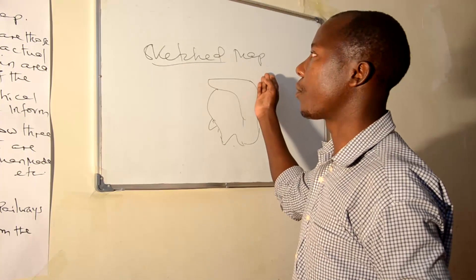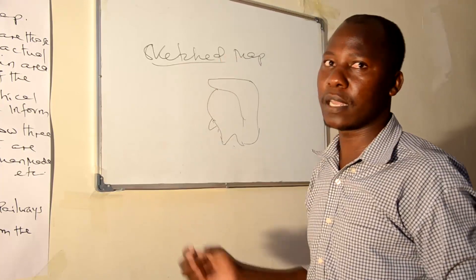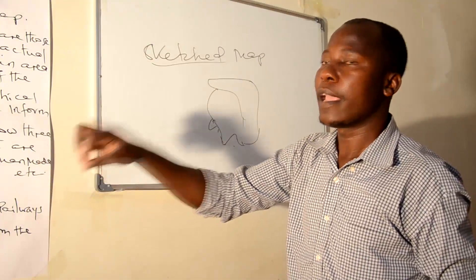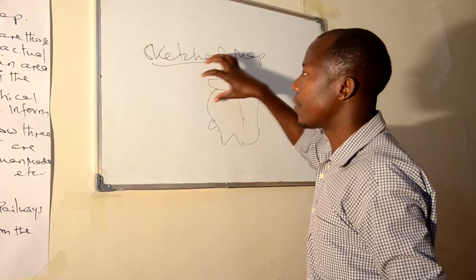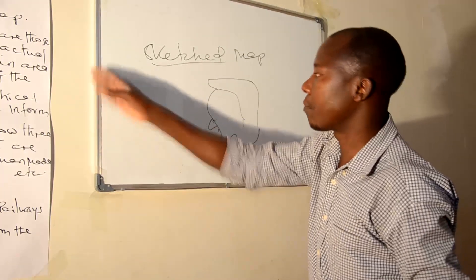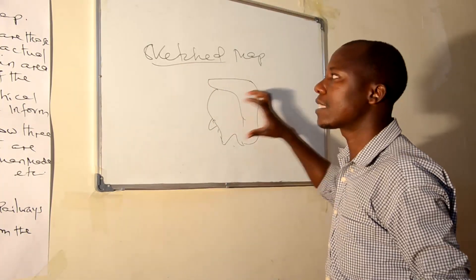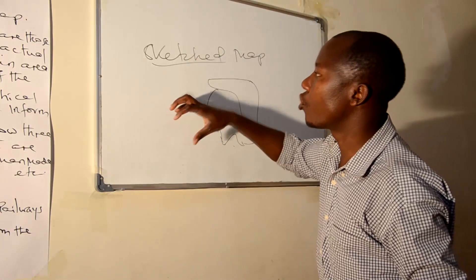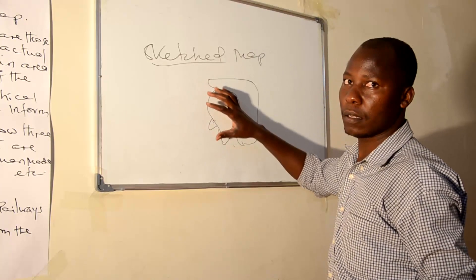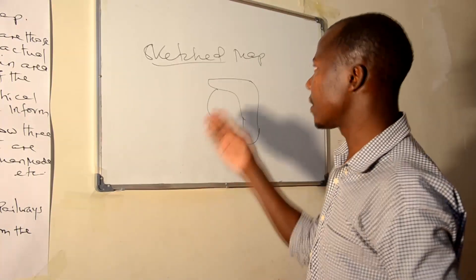That is called a sketch map — a kind of map which is roughly drawn using a scale. Why a scale? Because it is the ratio between the features on the Earth's surface and the distance on that area. For instance, you want to draw a zebra on this whiteboard. It can appear on the whiteboard, but the zebra cannot actually occur in this place because it is larger than this whiteboard. That is called a sketch map.